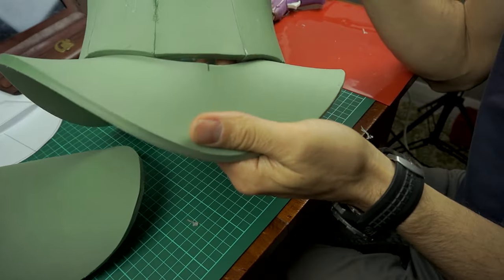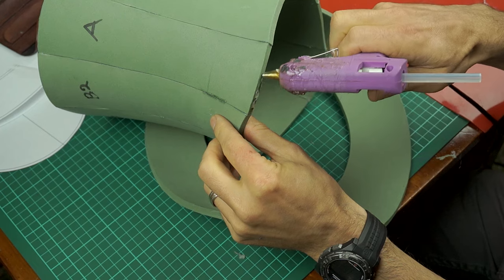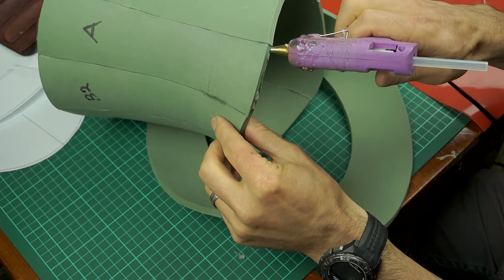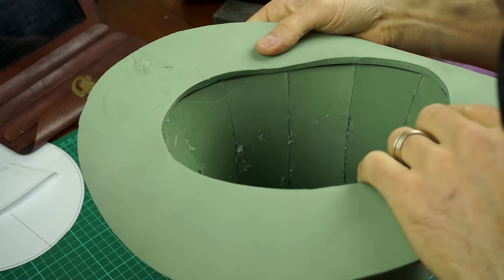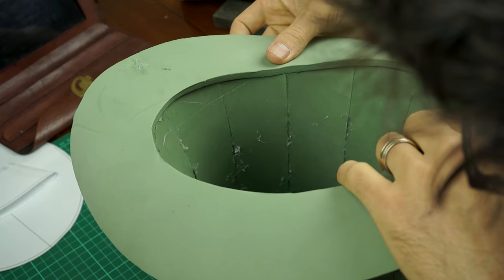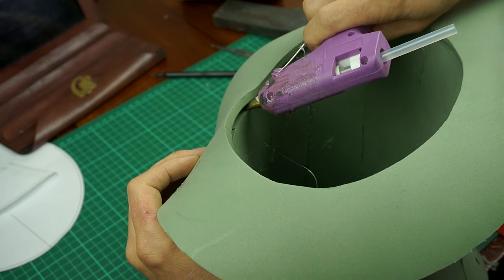Now the brim. Line up the center of the brim with the center of piece A and glue it on. Do the same with the opposite side. Find a spot halfway between the two you just glued and glue that down. Keep going until everything is glued.